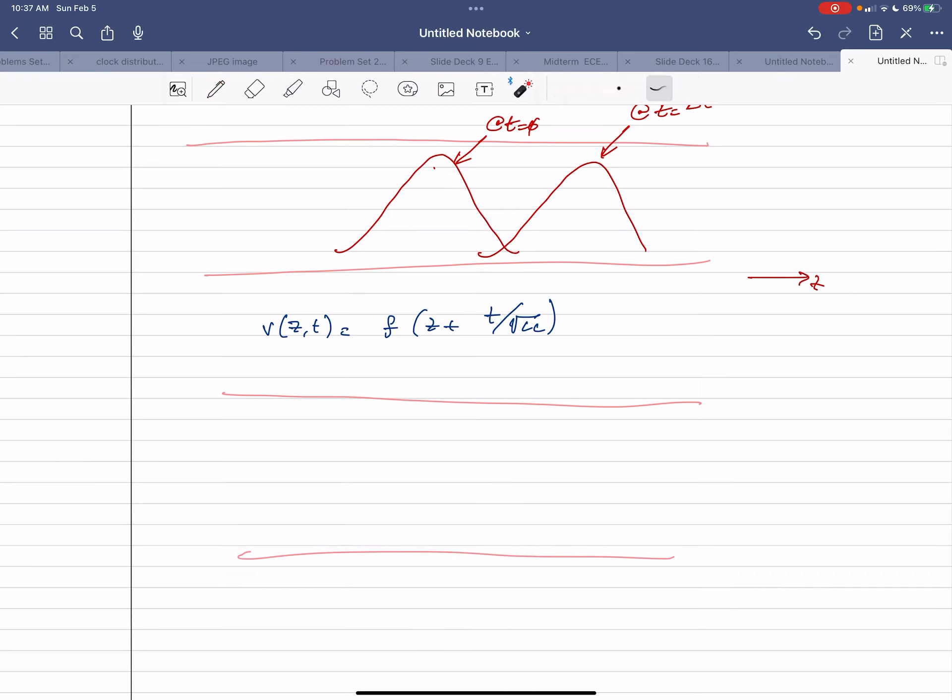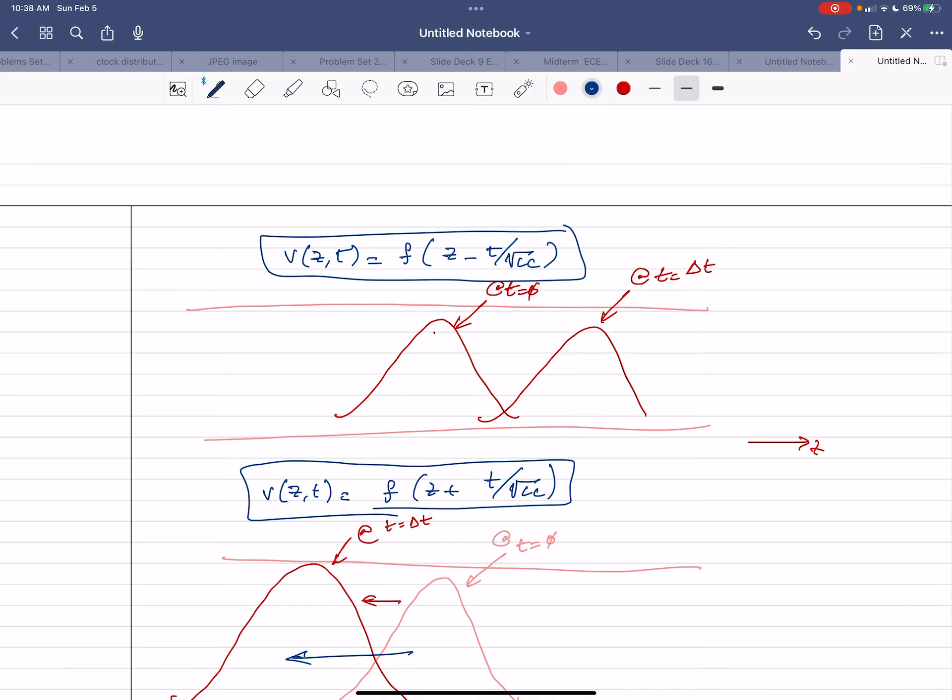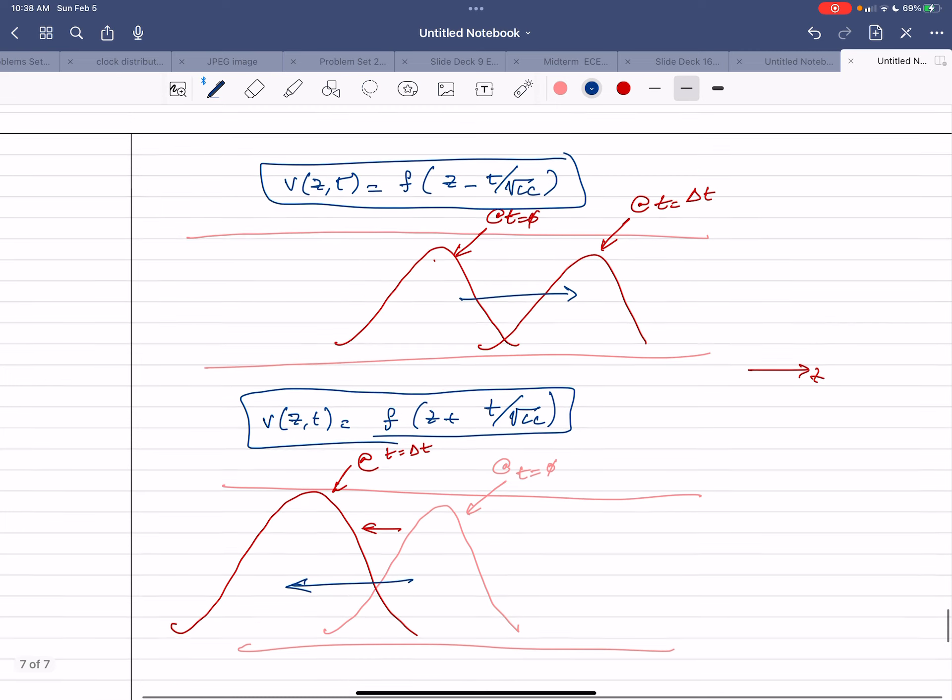If we look at a solution of v of z of t is f of z plus t over root LC, then we end up with the waveform, instead of going from left to right, it's going to go from right to left. So what's going to happen is at time t equal to zero, it's going to look like that. And at a time later, at t is equal to delta t, it's going to move over that way. So you're going to have a waveform that's moving to the left.